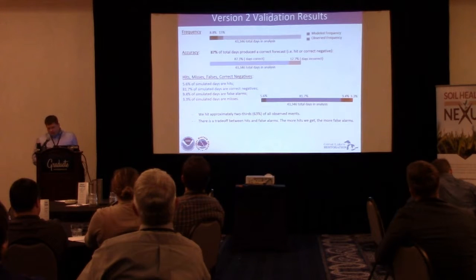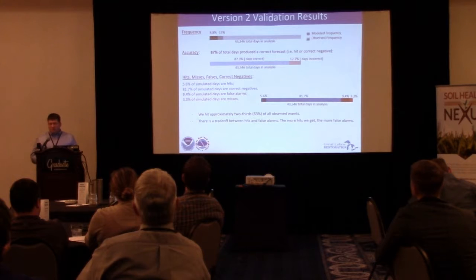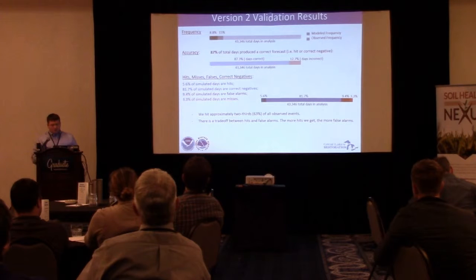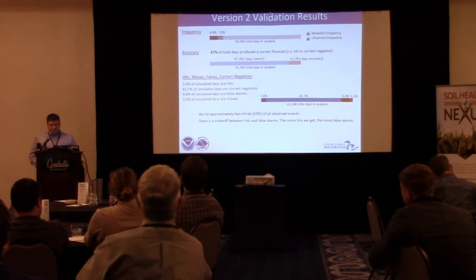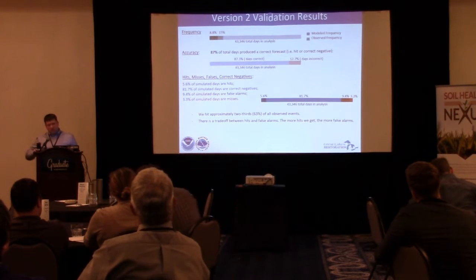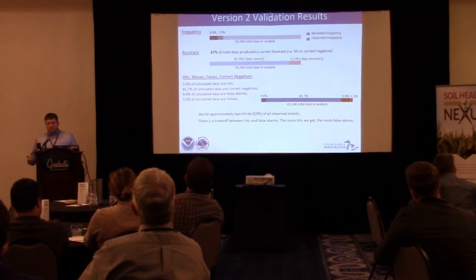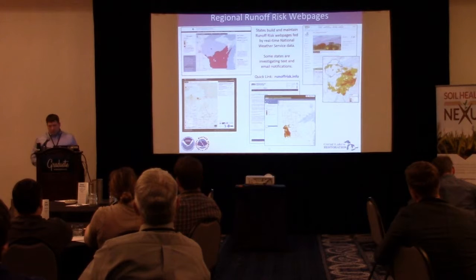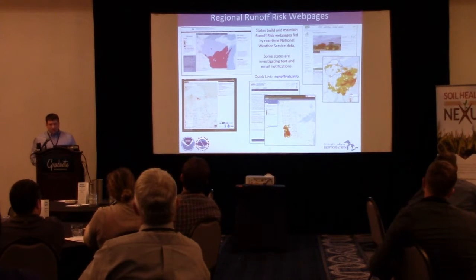We had 43,000 days that we could compare across all edge-of-field data sets. Generally about 15% of the time we simulated a runoff event; the observations showed about 9%, so we're a little higher, but that's not unexpected. About 87% of the time we were correct — either correct null or correct forecast. When we were wrong, about 9% of the time were false alarms and 3% were misses. We could dial that algorithm however we want — zero misses but more false alarms, or fewer false alarms with some misses — and the key question is whether the misses are small events and whether the false alarms can be thresholded out.